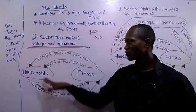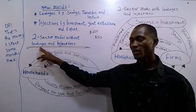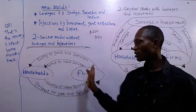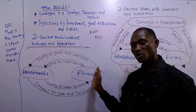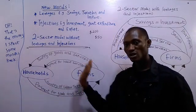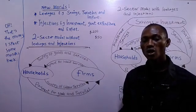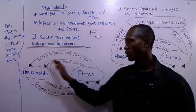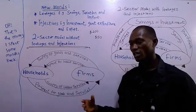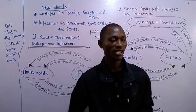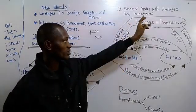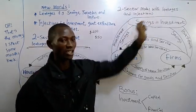So that's the two-sector model without leakages and injections. This flow of income between the household and the business firm will continue in this direction, barring no leakages or injections — the household will pay the firm, the business firm will pay the household, and so on. So let's take a look at the second diagram, which is also a two-sector model but with leakages and injections.